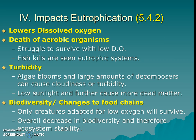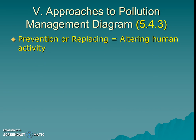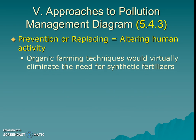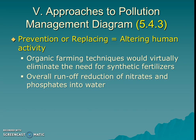We have to think about ways of dealing with and managing this pollutant using our three pollution management categories. The first and usually best option is to prevent or replace the pollutant by altering human activity. On farmland, we could use organic techniques — maybe use less or no fertilizer, or avoid synthetic ones that are really high in nitrates and phosphates. We could also try different techniques to reduce the runoff of nitrates and phosphates into the water — just don't let them get in in the first place.